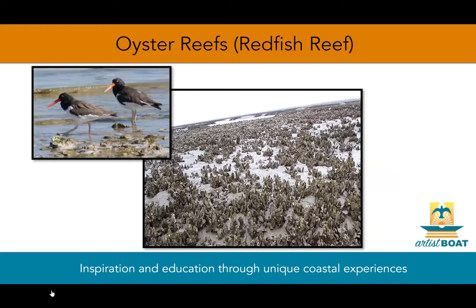Oyster reefs provide a solid base for plants and animals including algae, mussels, barnacles, snails, worms, and sea anemones — creatures that couldn't otherwise live on the soft bay bottom. Gobies, blennies, and other small fish shelter on the oyster reefs too. Oysters are food as well as shelter for some animals. Stone crabs and oyster drills prey on oysters, and boring sponges weaken the oysters they live on by burrowing into their shells.